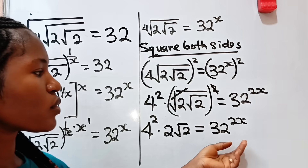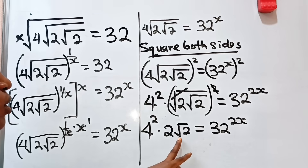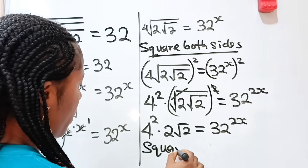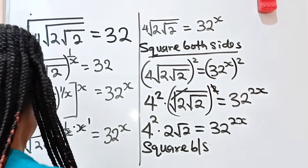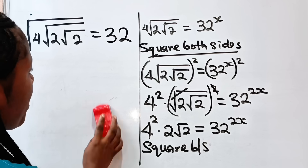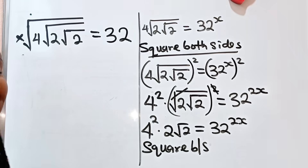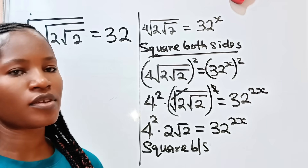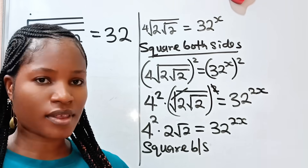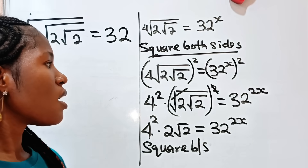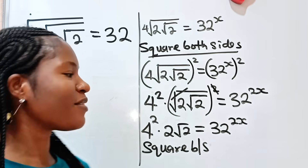Now let us square both sides again, because we can see that we still have a root sign here, so let us square so that we can cancel it. Is this the first time you are coming across this channel? If yes, please click the subscription button, turn on your notification bell so that you don't miss our amazing videos. We upload videos every time, so give us a thumbs up if you enjoyed this video.